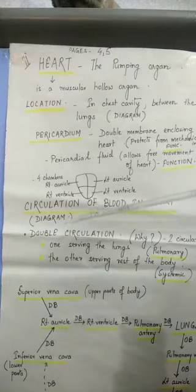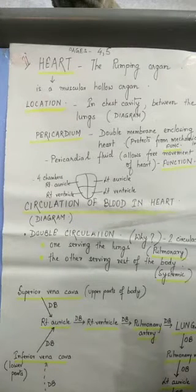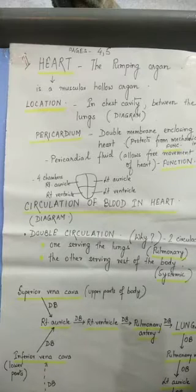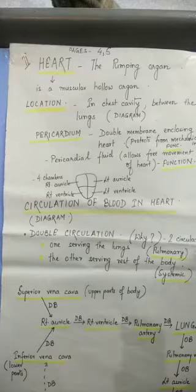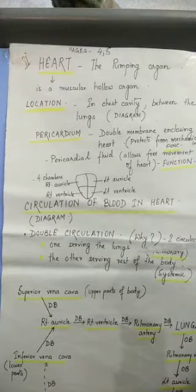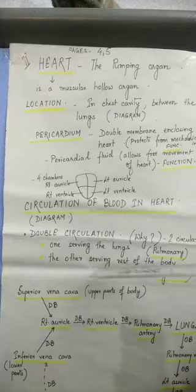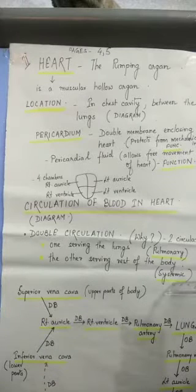Students, look into the diagram which is given in your book. The circulation of blood in the heart is called double circulation. Why? Because it has got two circulations. One serving the lungs is called pulmonary circulation. The other serving the rest of the body is called systemic circulation.